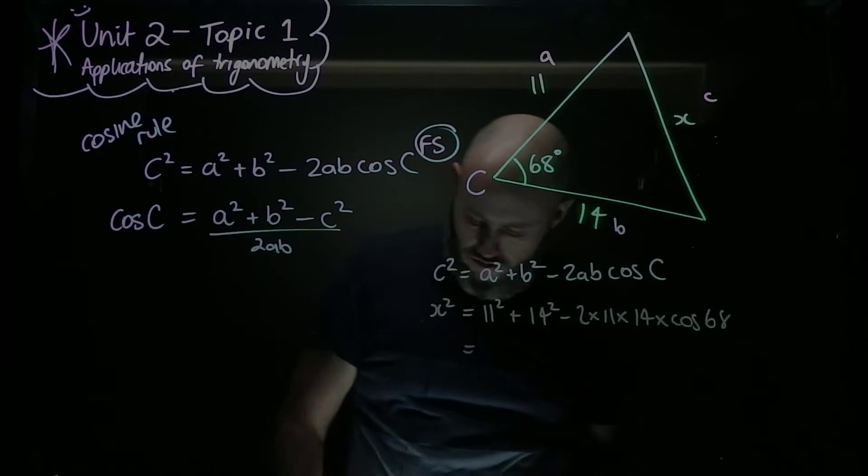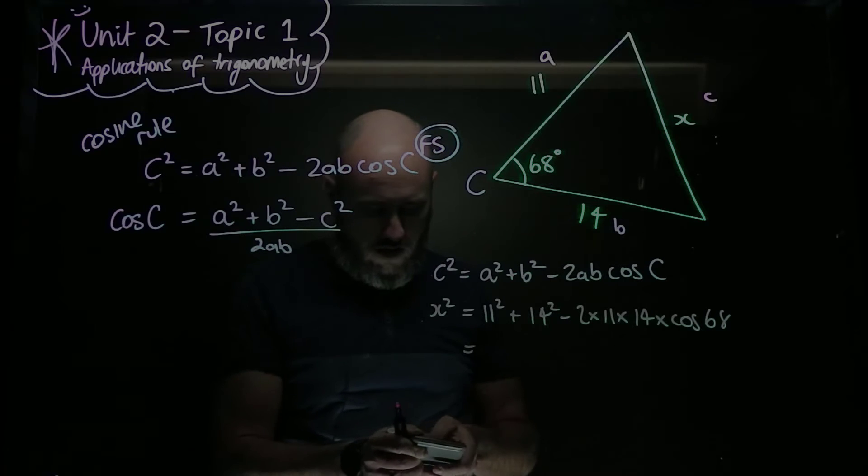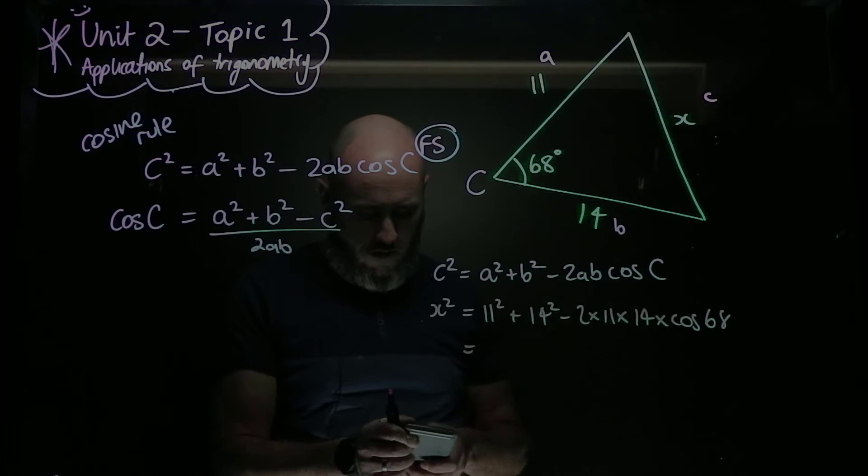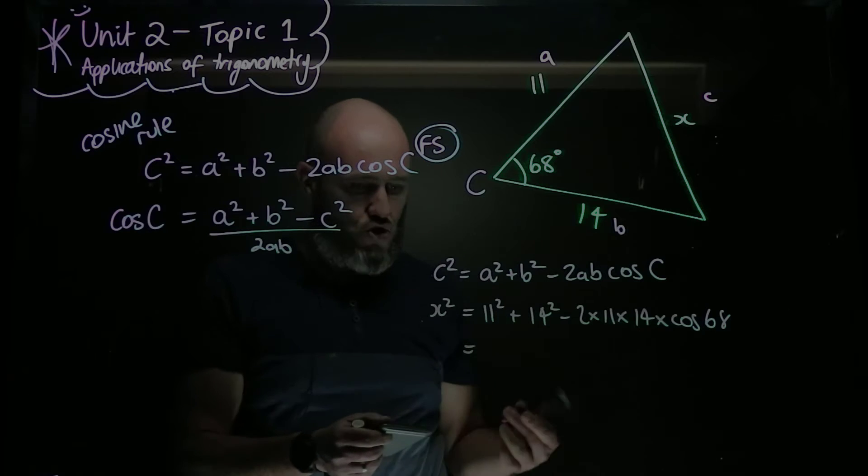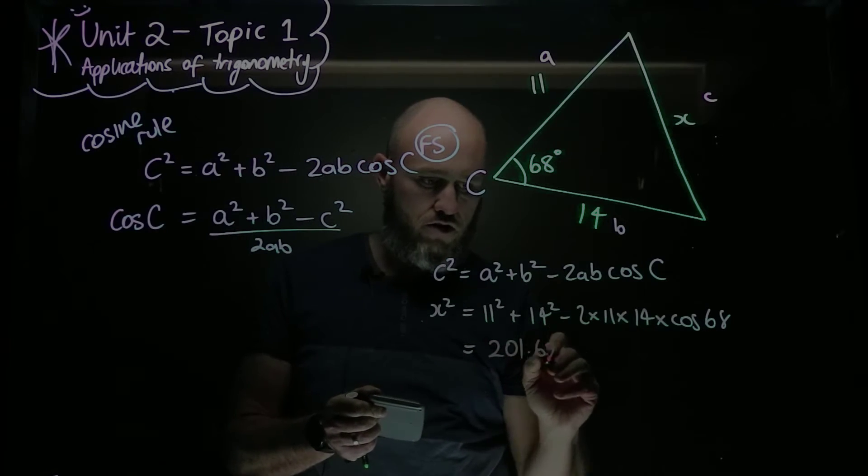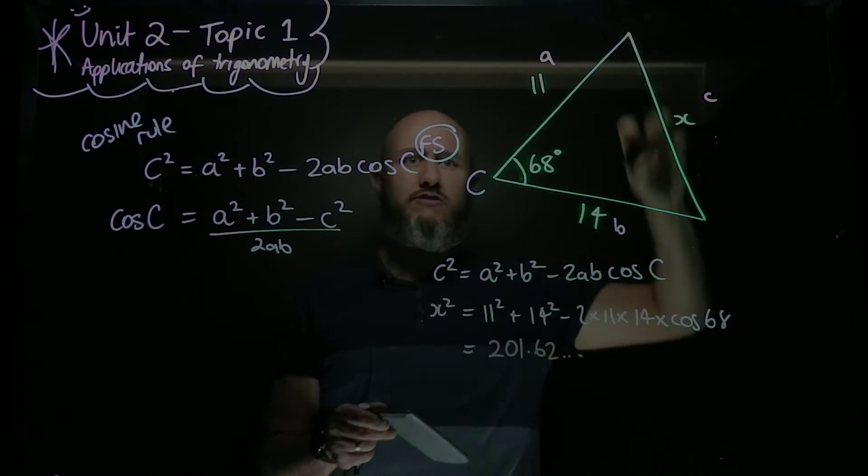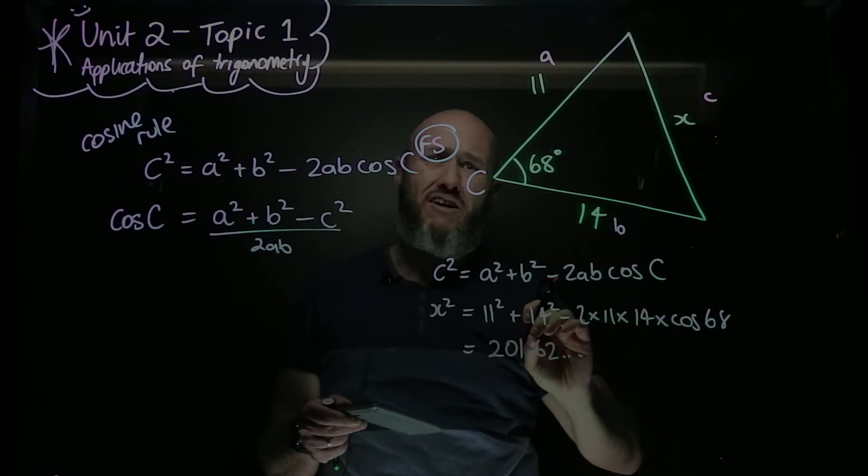That's where we head across to our trusty calculator again and do that calculation. 11 squared plus 14 squared minus 2 times 11 times 14 times cos 68, and that's equal to 201.62 dot dot dot. Now that is way too big for x, but it's a common mistake I'll see. People think they're finished now.